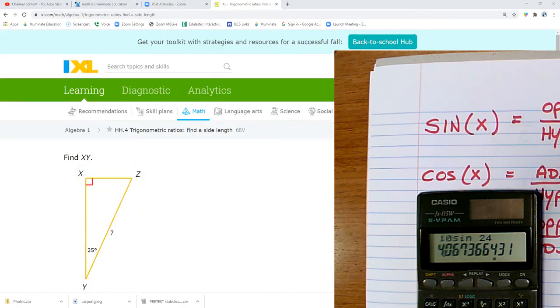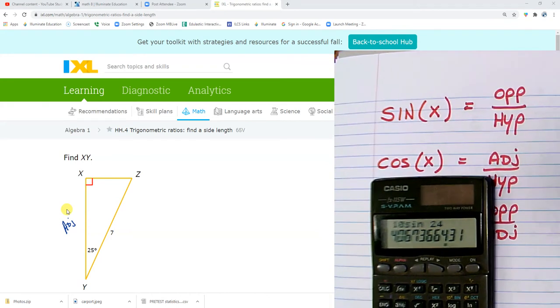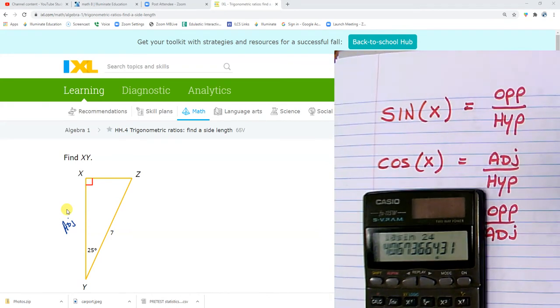Okay, this one, what do I have? I have the hypotenuse, and I'm looking for XY. I'm looking for the adjacent side. So I'm going to go with cosine. Cosine of 25 equals adjacent, which is what I'm looking for, over the hypotenuse, which I have. So I'm going to go 7 cosine of 25. 6.3.